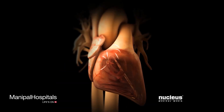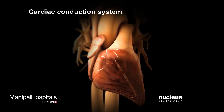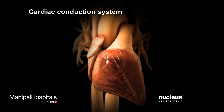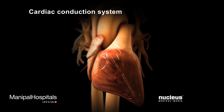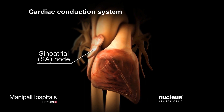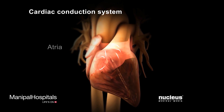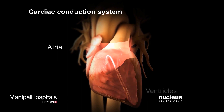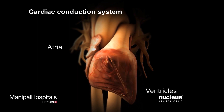A group of cells in the heart, called the cardiac conduction system, uses electrical impulses to control the speed and rhythm of each heartbeat. Each heartbeat starts in the right atrium in the sinoatrial, or SA, node, then spreads through the walls of the heart chambers, called the atria and ventricles, causing them to contract. This process repeats with each heartbeat.